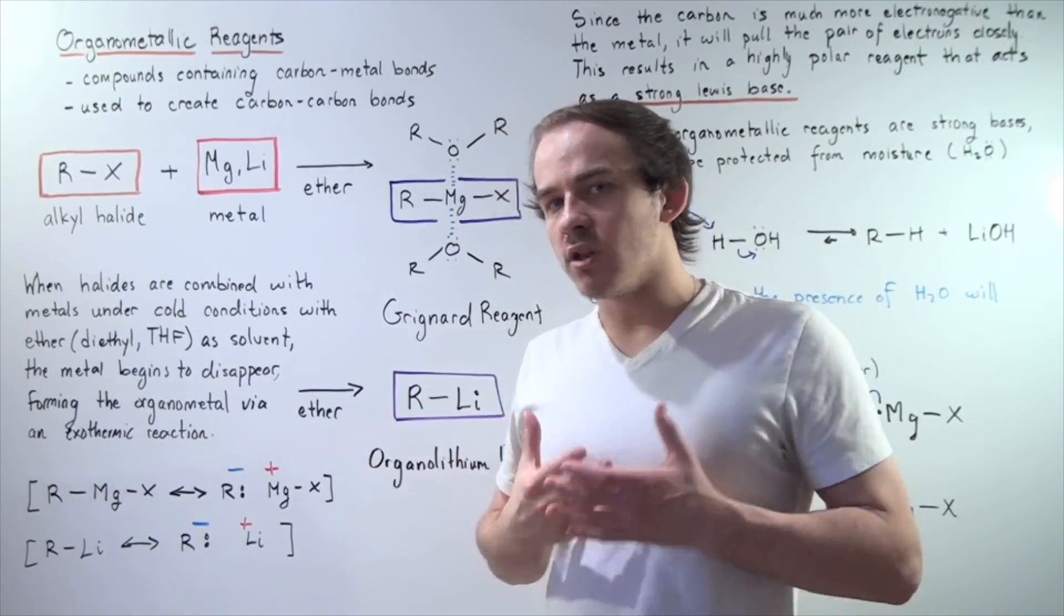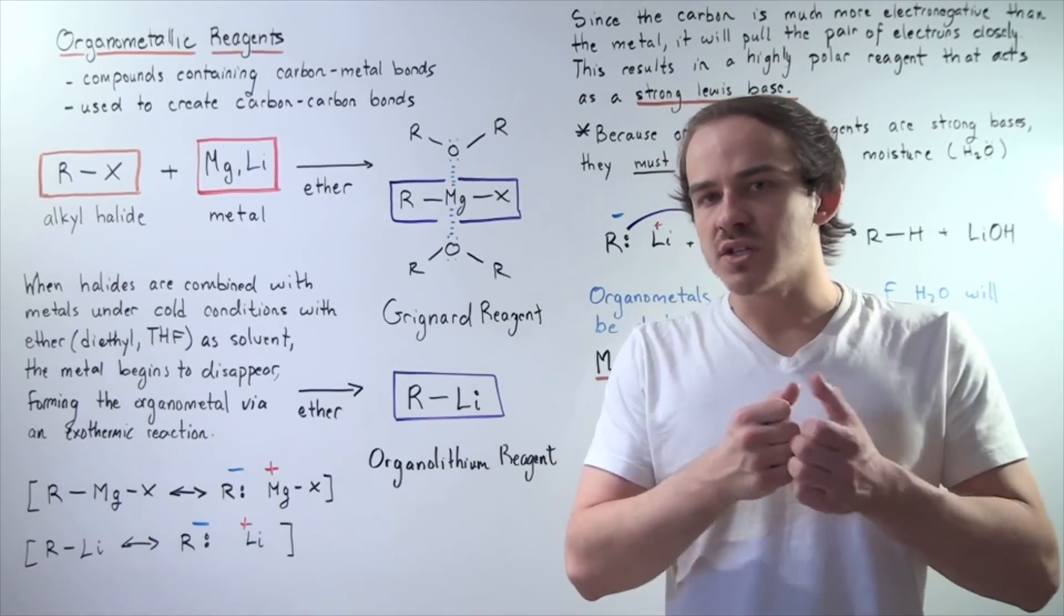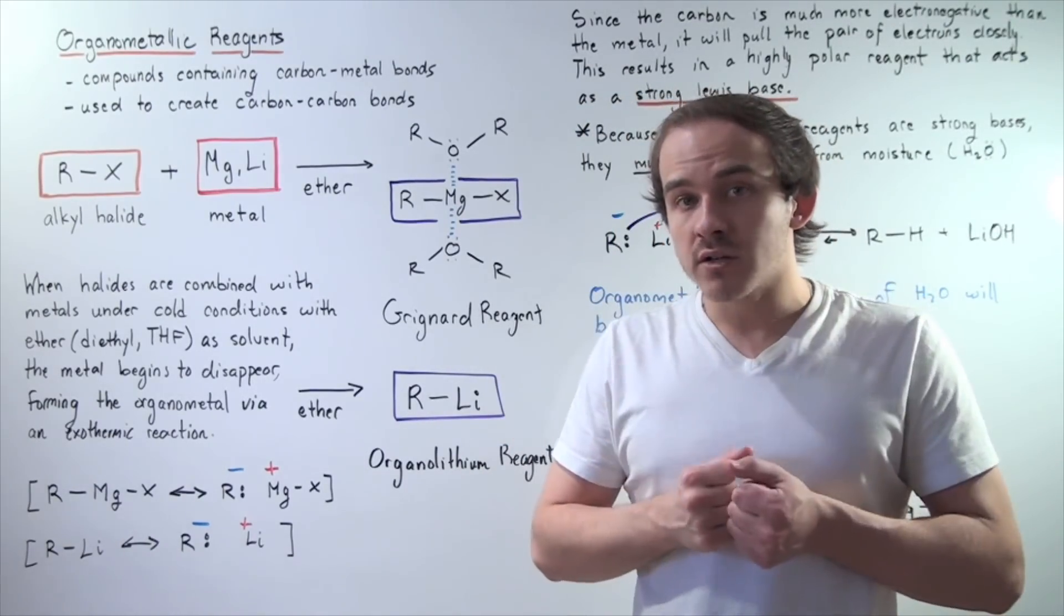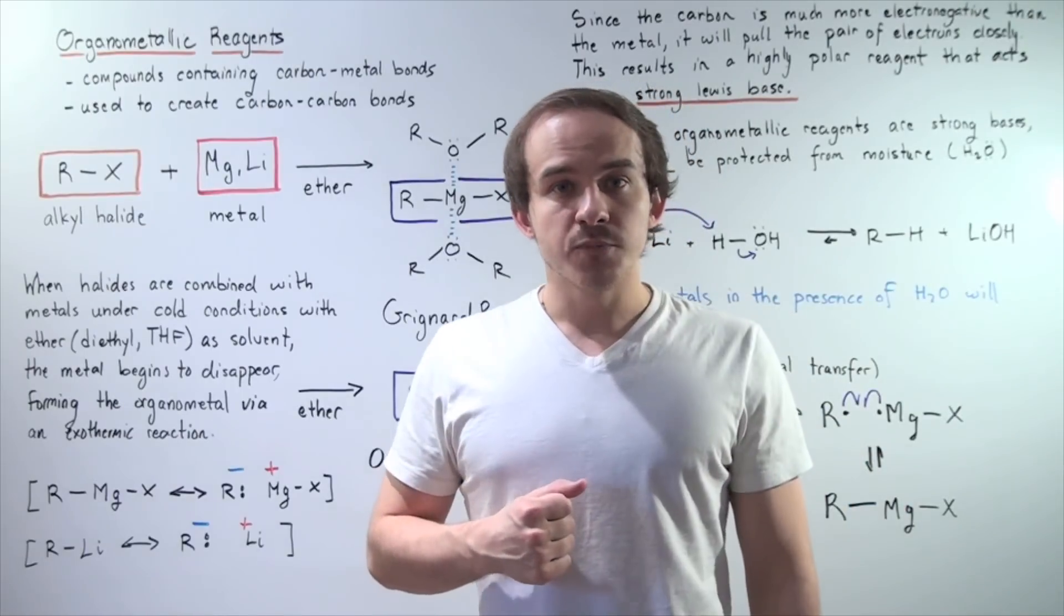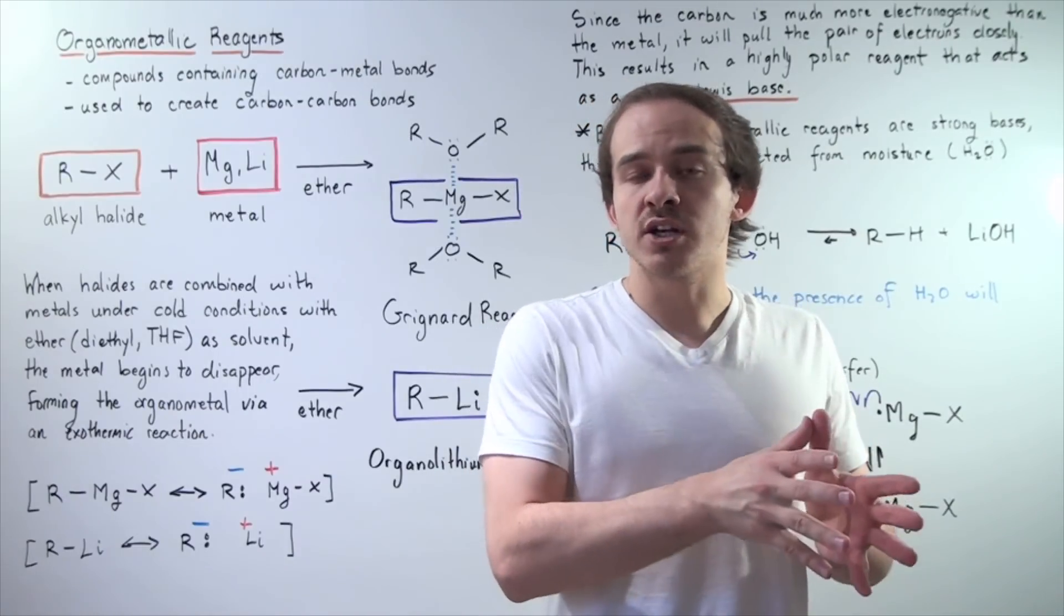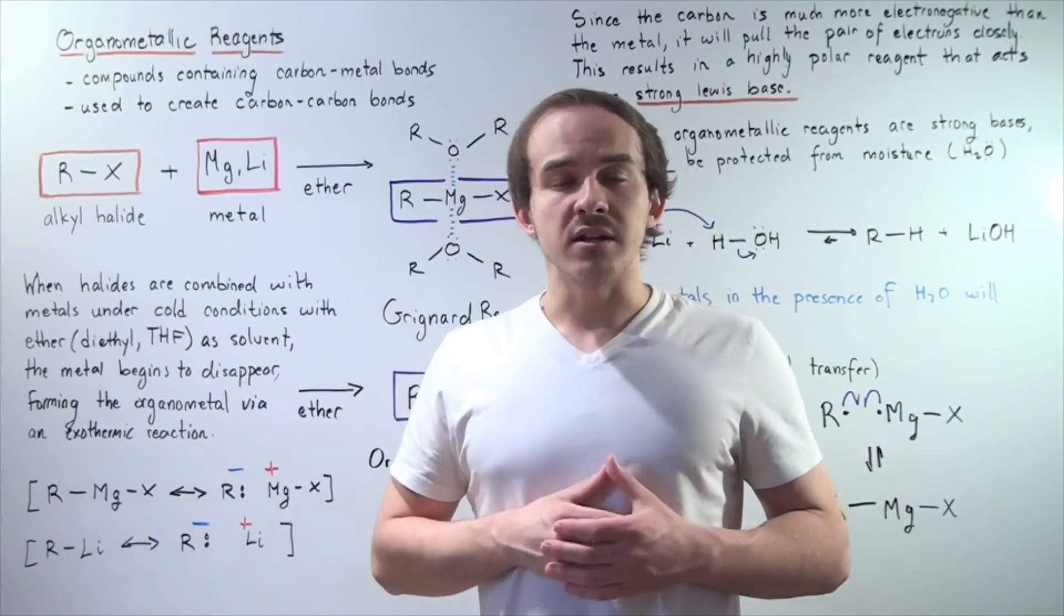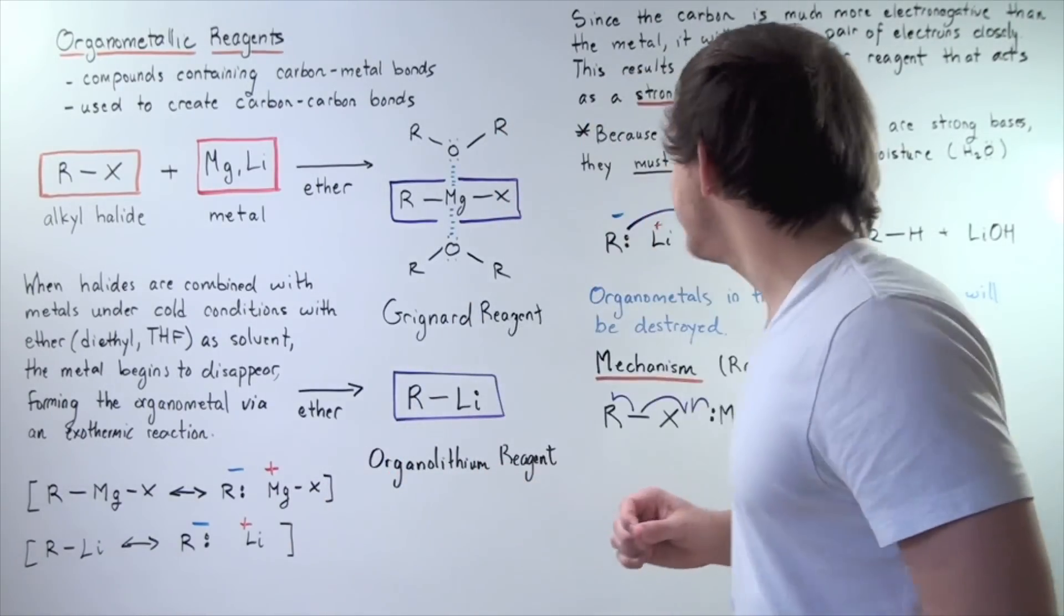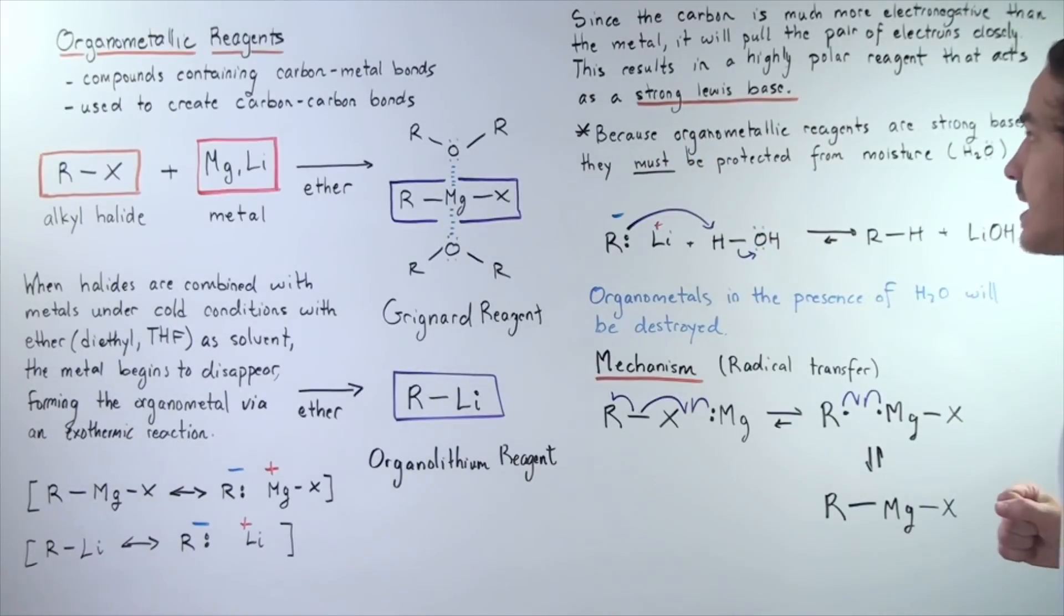So once again, because our carbon is so much more electronegative, it pulls those electrons more strongly than our metal does. And as a result, the electrons are found much closer to the carbon than to the metal atom. And this creates a strong Lewis base.